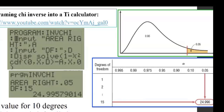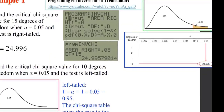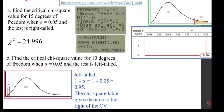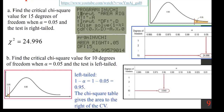In the second case, degrees of freedom is given as 10 and alpha is 0.05, but this time it's a left-tail test. Therefore, the area to the right is 0.95. If you want to do the reading, look at the area of 0.95 — this is because of the way the table works. The answer is 3.940.